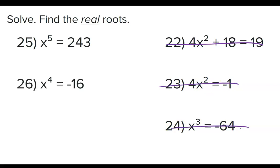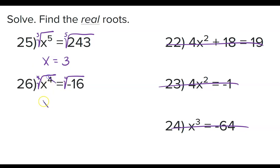Problem 25: we fifth root both sides. The fifth root of 243 is 3 — I used my calculator for that. Problem 26: x to the fourth — we fourth root both sides. That's an even root so we need the plus or minus symbol. However, this would be an imaginary number; it actually should be ±2i. But the directions clearly say real roots, so the answer is no real roots.